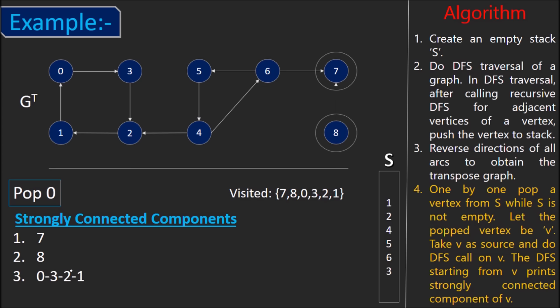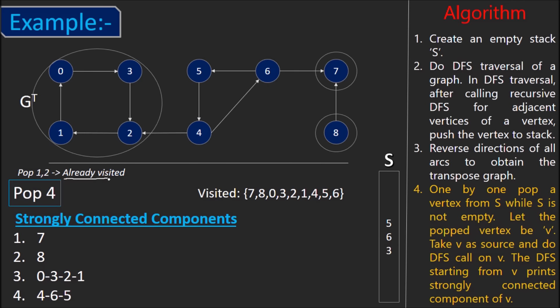Now, let's pop 0. We see that vertices 0, 3, 2 and 1 get visited by applying DFS on 0. So, vertices 0, 3, 2, 1 form one strongly connected component. Also, vertices 0, 1, 2, 3 get visited in the process. So, when we'll pop 1 and 2 in the next step, we don't need to apply DFS on them.